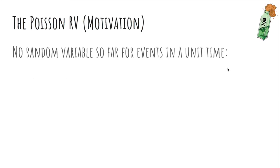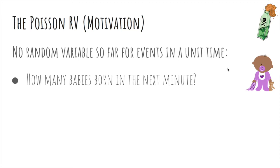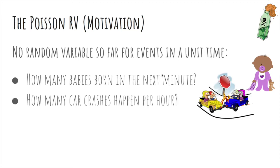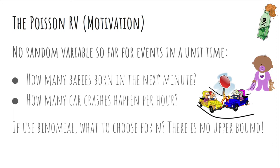So far, none of our random variables can measure events in a unit of time. For example, how many babies are born in the next minute, how many car crashes happen in the next hour. If we used a binomial random variable, we wouldn't know what to choose for n, because there's no upper bound on these quantities.